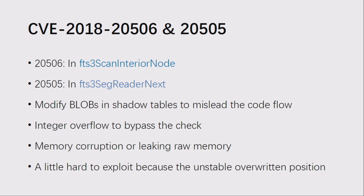The second vulnerability, CVE-2018-20506, is in the function scanInteriorNode. Its precondition is simpler: you just modify the shadow table, setting a node in segdir to a non-root node. You can change the blob data to change the code flow, then query the modified table by keyword MATCH. The code scans every node inside the B-tree and triggers memory corruption due to unconstrained conditions. The third, CVE-2018-20505, is similar to a combination of the previous two — the vulnerable function is segReaderNext and you can modify the shadow table to mislead the code flow. All three vulnerabilities can be modified to leak raw memory, leaking addresses of functions, structures, global variables, and constant variables to bypass ASLR.